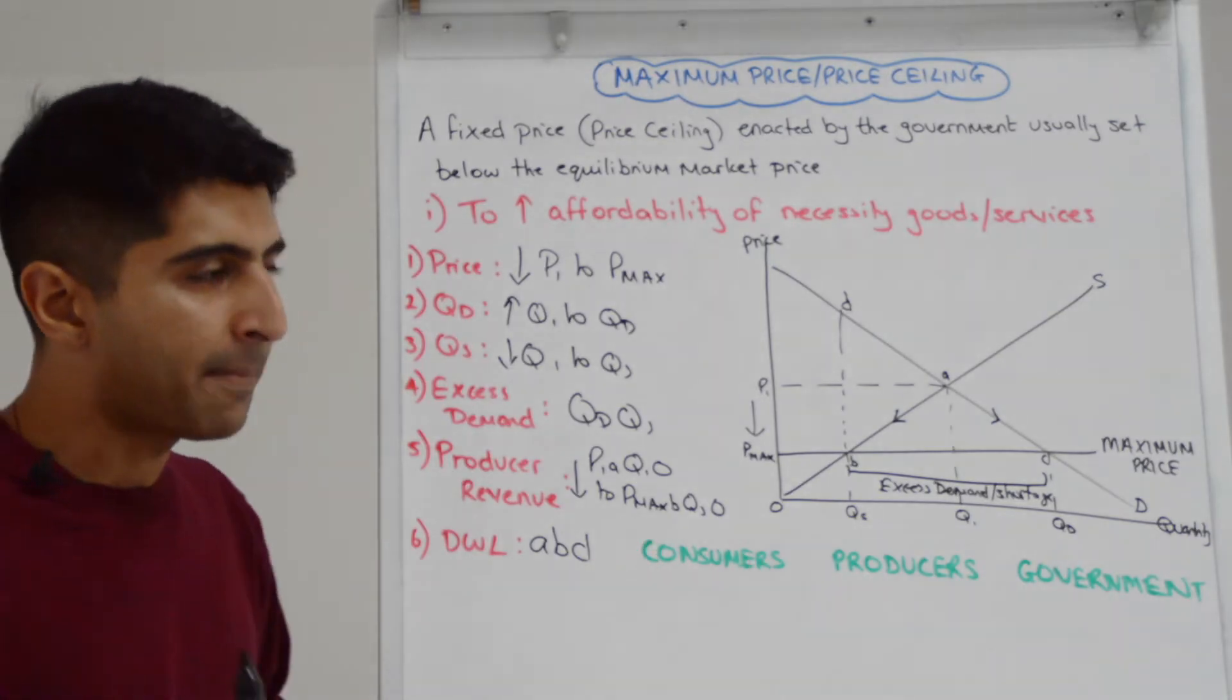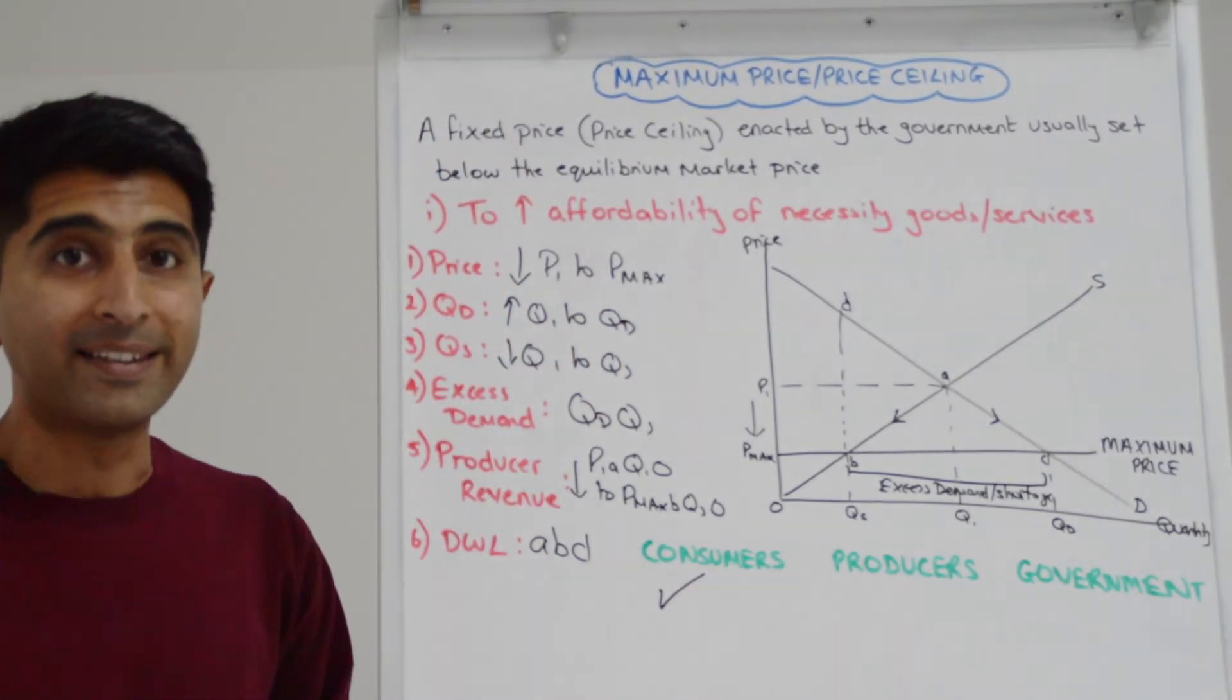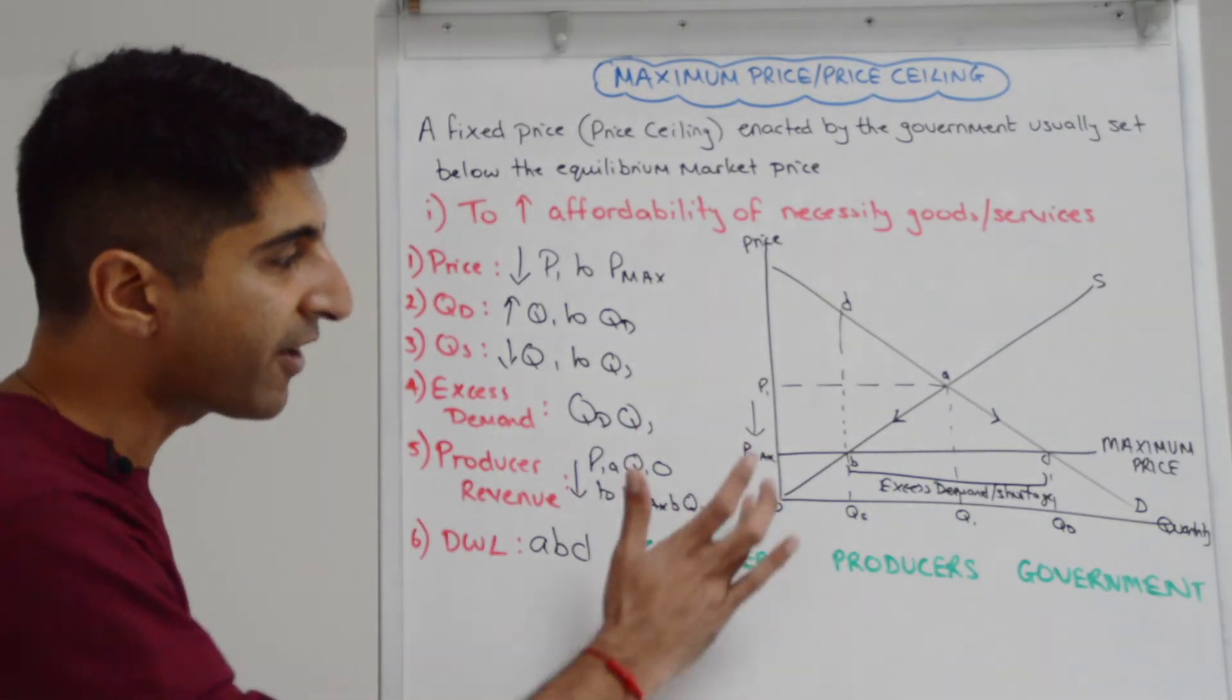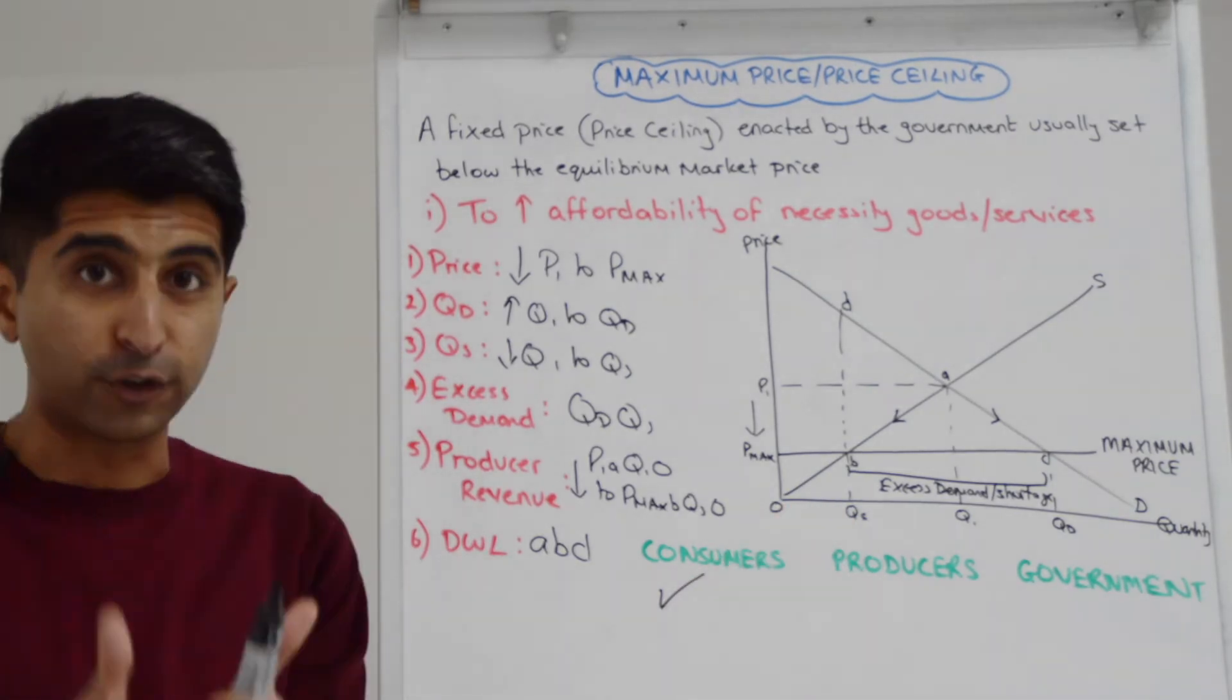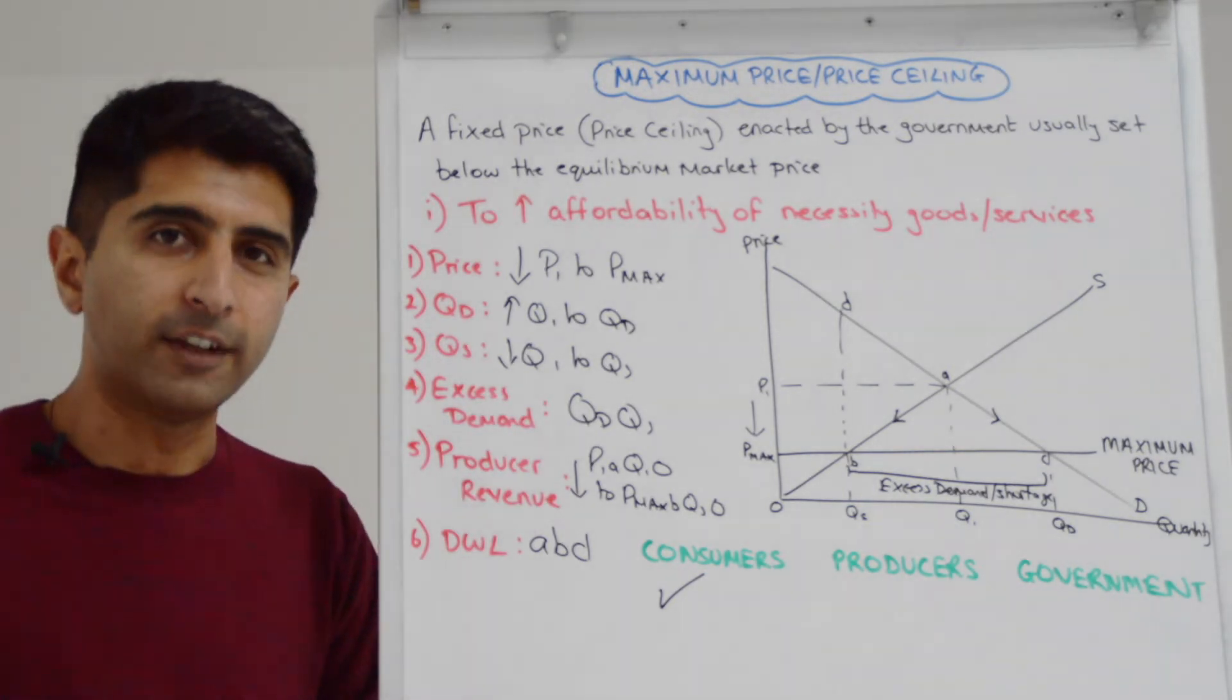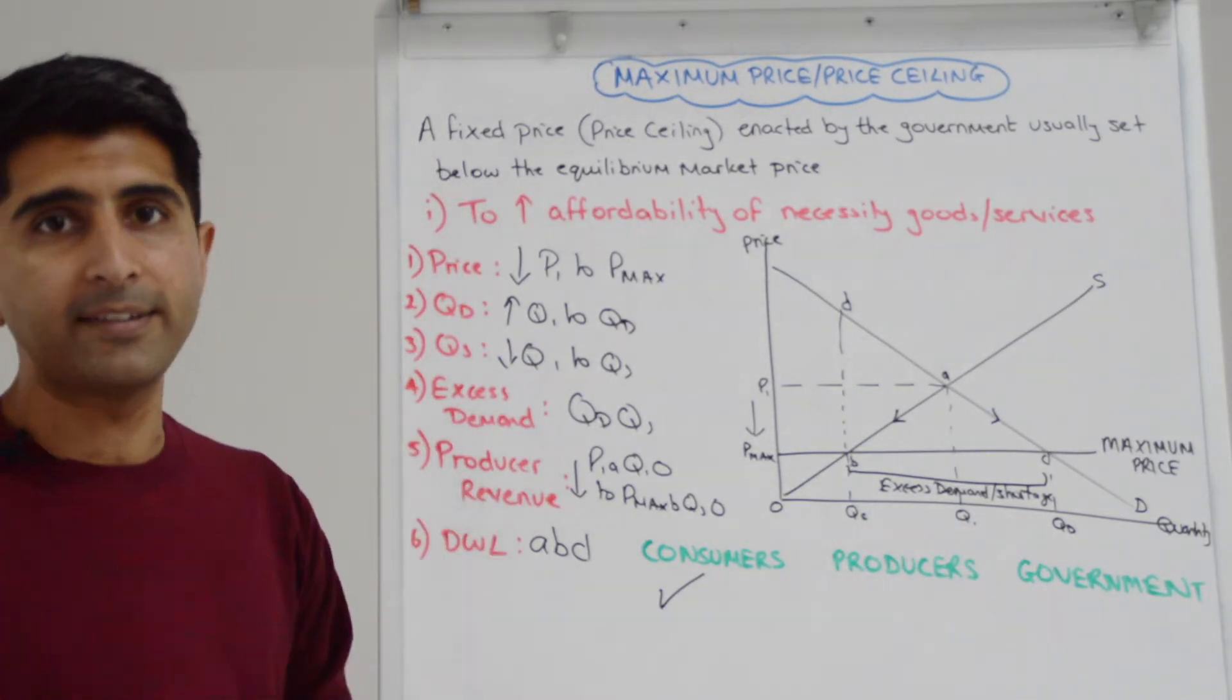But let's now go and look in detail at the impact on key stakeholders in this market. Well, on the one hand, we can argue consumers are benefiting from a maximum price as long as they can access the market. So those who are able to buy, whether it's rented accommodation, groceries or whatever, at this lower price, they're in that quantity from zero to QS. Good for them. They are seeing greater affordability. Their consumer surplus is rising. Their welfare is rising. Good for them.